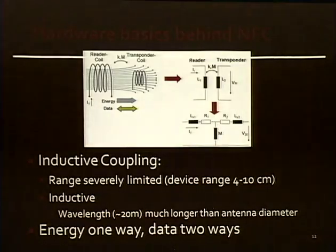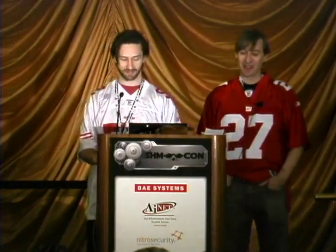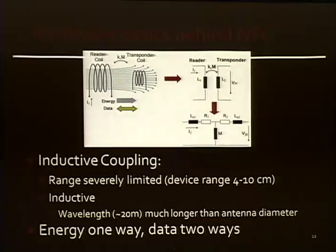Some of the hardware basics behind NFC: it's inductive coupling. That's why the tag looks like a coil — it's not your typical antenna. It's a near-field technology, which means the range is severely limited. The stated range, and we'll emphasize stated, is 4 to 10 centimeters. The wavelength is about 20 meters for the 13.56 megahertz wave, which is much longer than the antenna diameter, making it near-field. The important thing to take away is that there's one device providing the power — typically your phone — so you have energy going one way and data coming both ways.